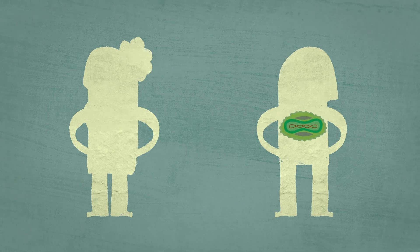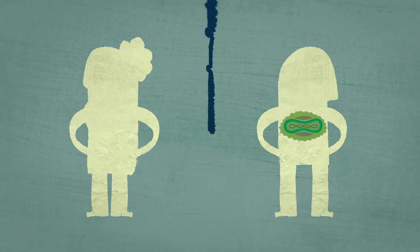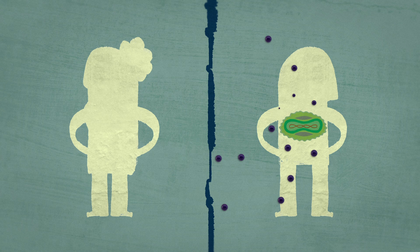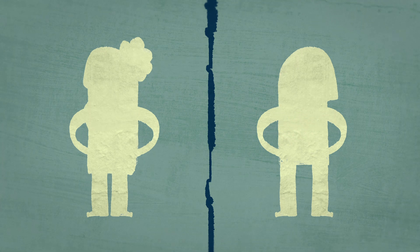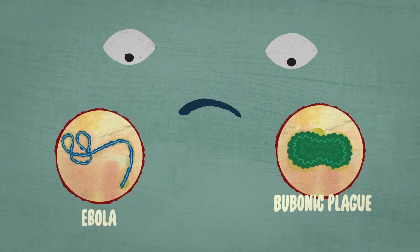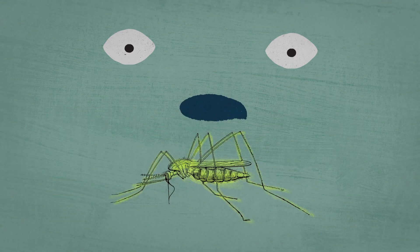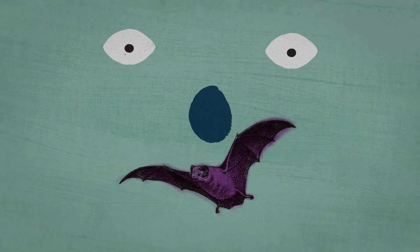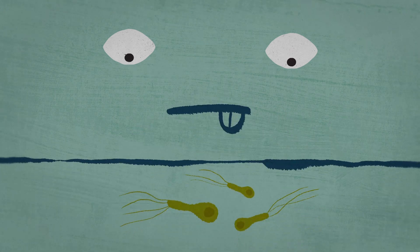There were several factors that made smallpox an ideal candidate for eradication. First, humans are essential to the smallpox life cycle, so breaking the chain of human-to-human transmission causes the virus to die out. In contrast, many other pathogens like Ebola or the bubonic plague can survive in animal carriers, while the bacteria that cause tetanus can even live in the soil.